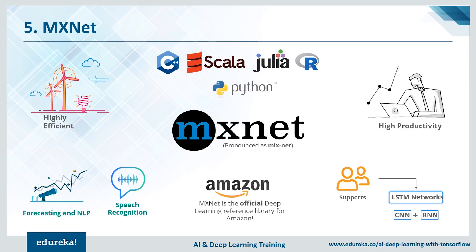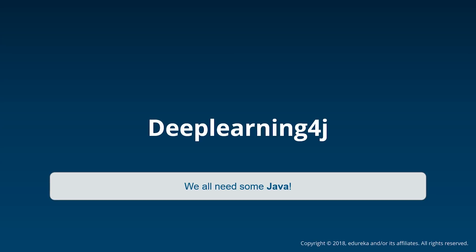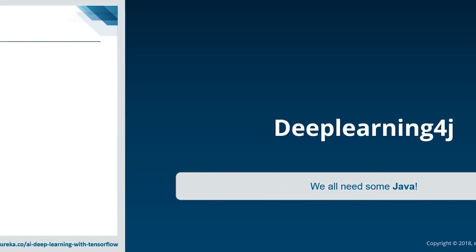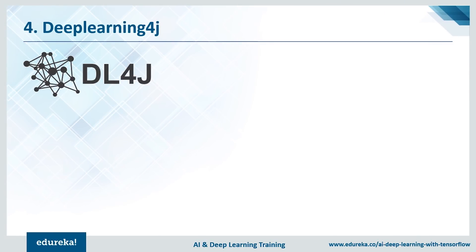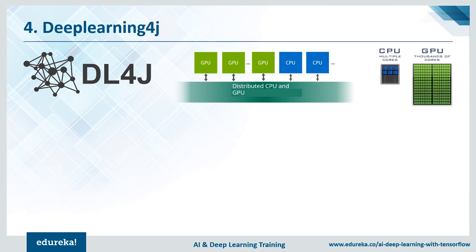We're looking at interfaces like C, C++, Python, and even MATLAB, but there's something missing that makes our lives simpler — Java. We have a framework tailor-made for this: Deep Learning for Java. The biggest highlight is that it provides parallel training through iterative reduce and microservice architecture adoption, coupled with distributed CPUs and GPUs.